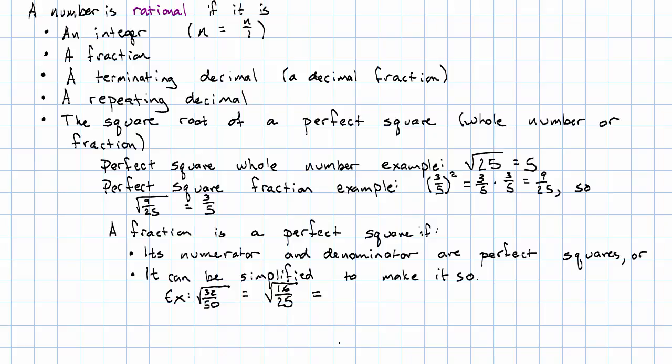Numerator and denominator are perfect squares. I do square root to each. That's four-fifths, because four-fifths squared will be four times four over five times five is sixteen twenty-fifths.